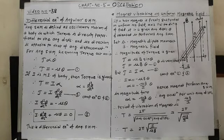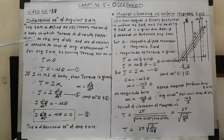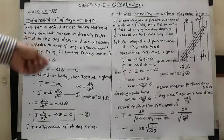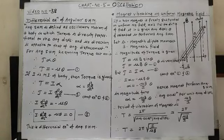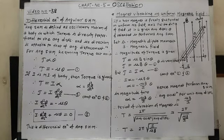What is meant by angular SHM? Angular SHM is defined as an oscillatory motion of a body in which the torque is directly proportional to the angular displacement and its direction is opposite to that of the angular displacement. This is nothing but the angular SHM.